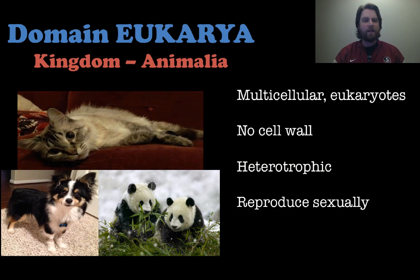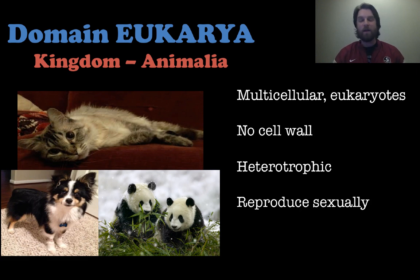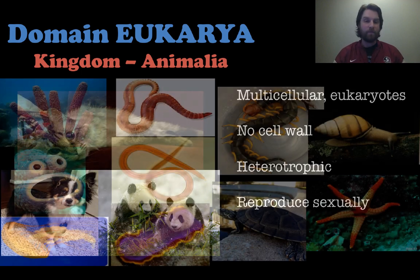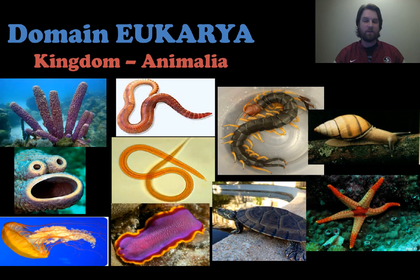Next is kingdom animalia within the eukarya domain. These are multicellular, eukaryotic organisms. Humans are part of kingdom animalia. We do not have cell walls, we are heterotrophic, and we cannot make our own food through photosynthesis. All animals reproduce sexually. And it's not just cats, dogs, and pandas — there are all types of things in the animal kingdom, from different types of worms to sea creatures to turtles and everything in between. Animalia is quite a large kingdom.